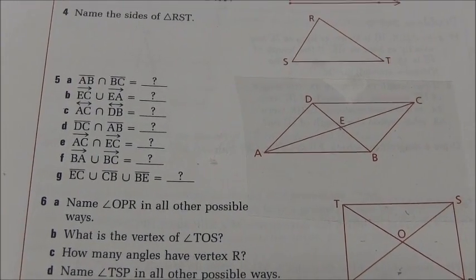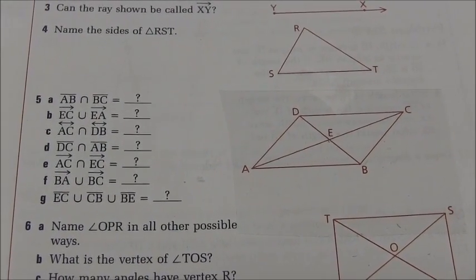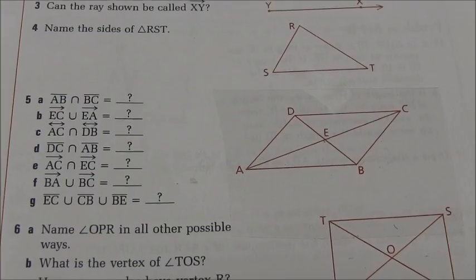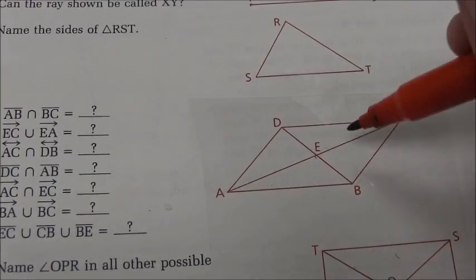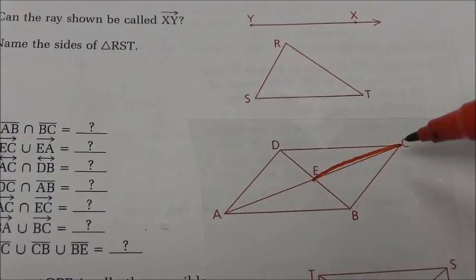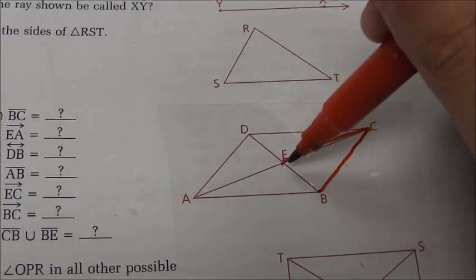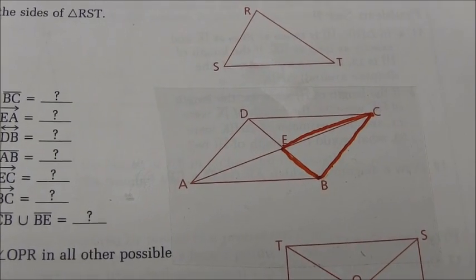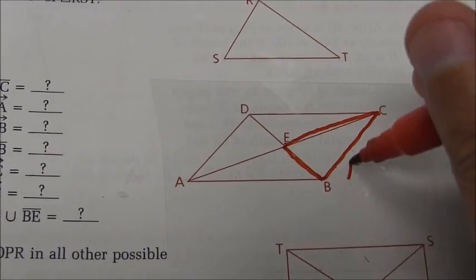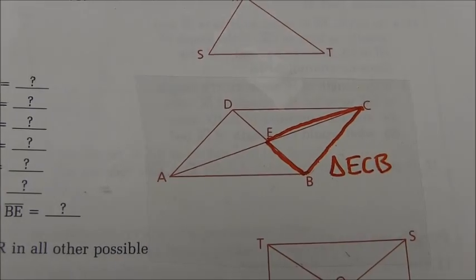We've got our final example here, 5G. Notice it's the union of segment EC with segment CB with segment BE. Remember that the union involves every point on any of those. I can trace segment EC, I can trace CB, and I can trace segment BE. The final shape here that I've traced, the union uniting everything, is a triangle, and we would name that triangle any combination of those points: ECB. That's one possible answer.